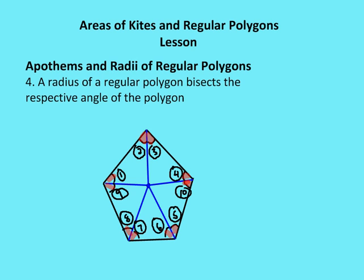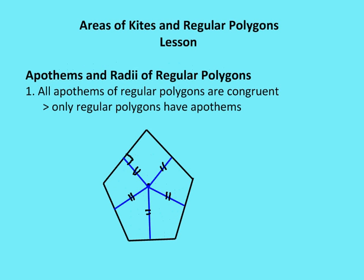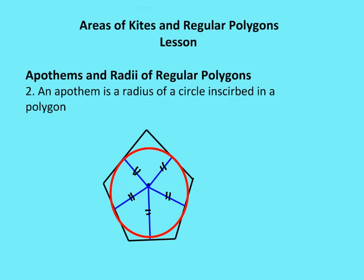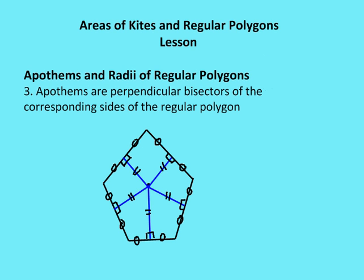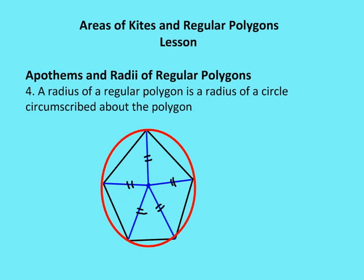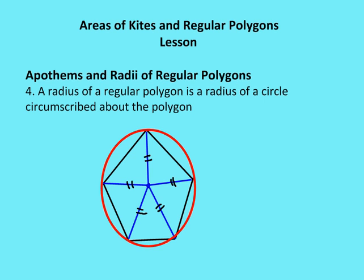To recap those characteristics: apothems of a regular polygon are congruent; an apothem is a radius of a circle inscribed in the polygon; apothems are perpendicular bisectors of the corresponding sides; a radius of a regular polygon is a radius of a circle circumscribed about the polygon; and a radius of a regular polygon bisects the respective angle of the polygon.